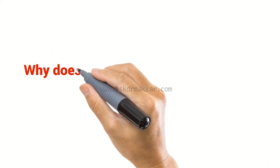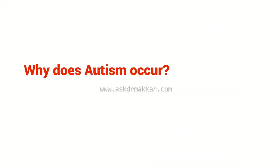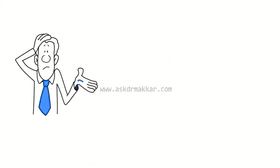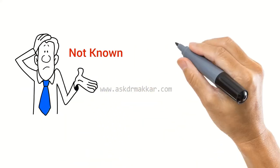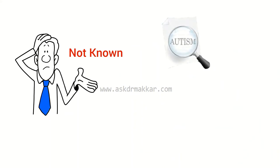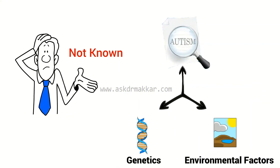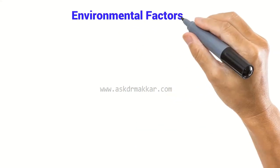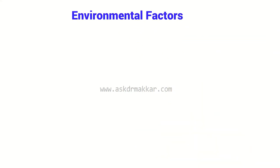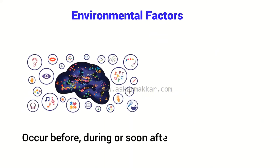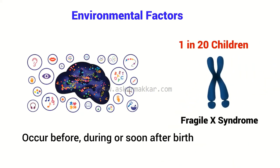Why does autism occur? What causes autism? The exact cause of autism is still not known. Recent research indicates it could be a combination of genetic and environmental factors. The environmental factors could be a variety of conditions affecting brain development, which can occur before, during, or soon after birth. 1 in 20 children with autism also has Fragile X syndrome.